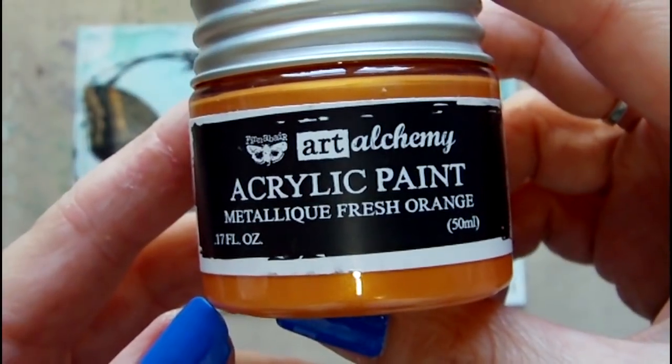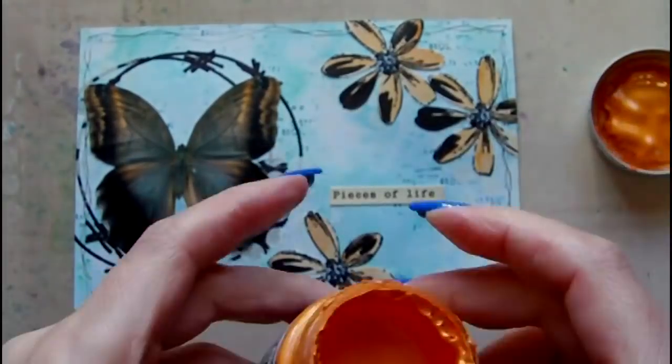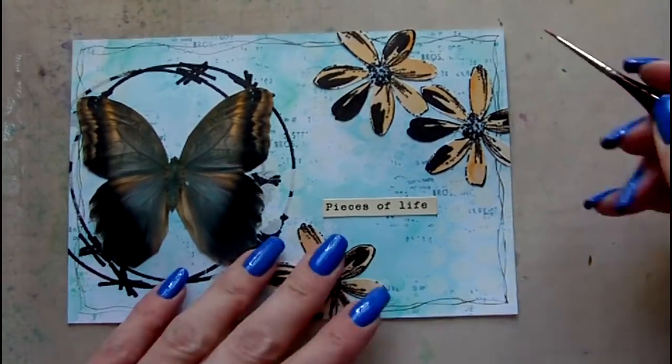Next I'm adding some color to my border. For this, I've chosen Prima Art Alchemy paint in the color Fresh Orange.